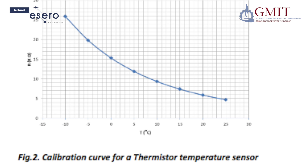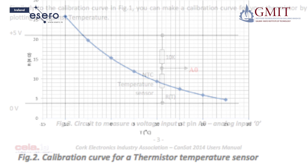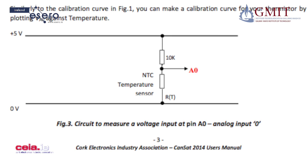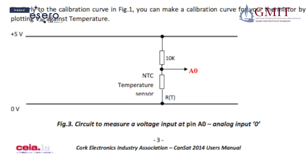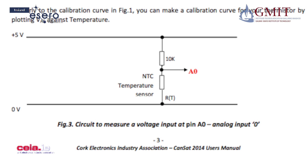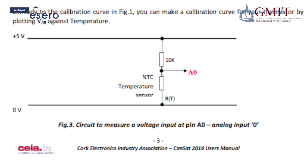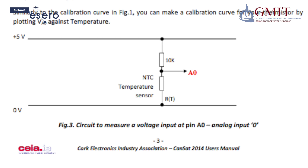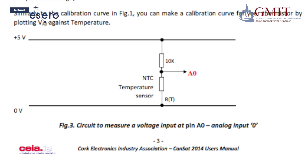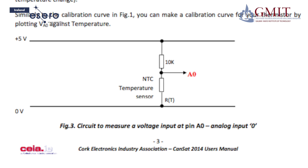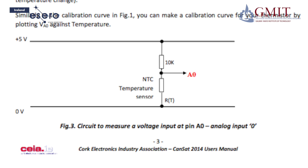In the circuit I'm about to build, there's a potential divider circuit. This means that the voltage or potential at the black dot between the two resistors — 10K and RT, the thermistor — depends on the value of RT. Thus, the voltage at pin A0 changes when the resistance of the thermistor changes due to temperature change.